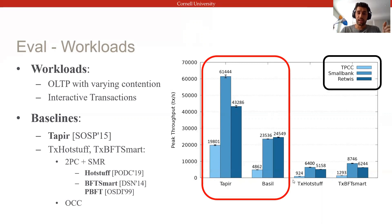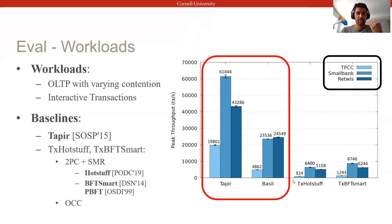On the left, we compare Basel to Taper, a recent state-of-the-art crash-failure database that uses a similar client-driven approach. Basel's main overheads stem from requiring signatures and larger quorums to be Byzantine fault-tolerant, but it nonetheless offers competitive performance given the increased security.